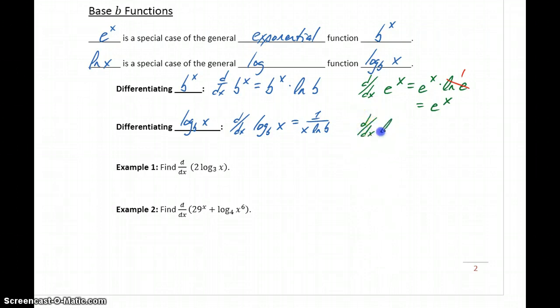Again, this is the same property we use for differentiating the natural log function. We would get 1 over x times the natural log of the base, which in this case is e, which again just becomes 1. And so, that's where we get 1 over x for the derivative of the natural log of x.